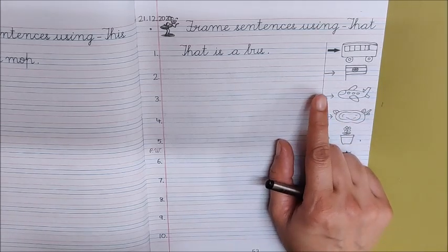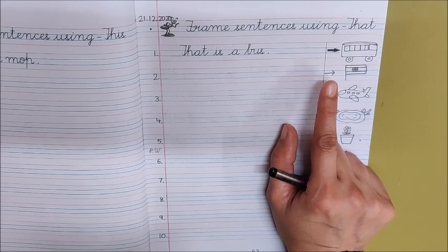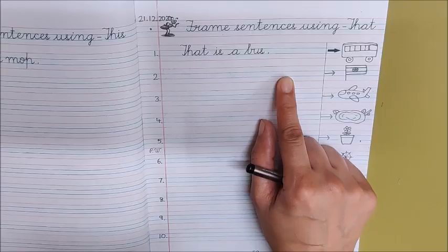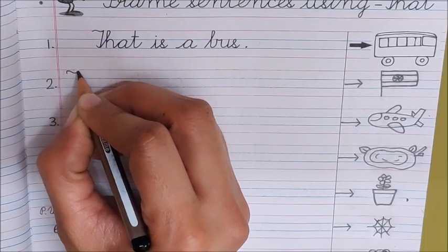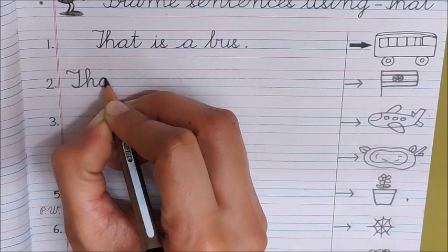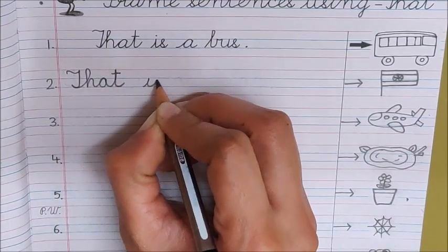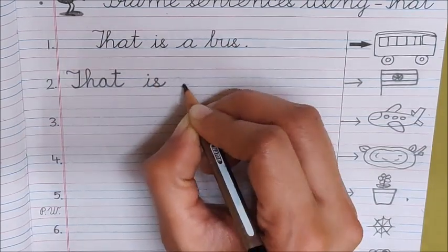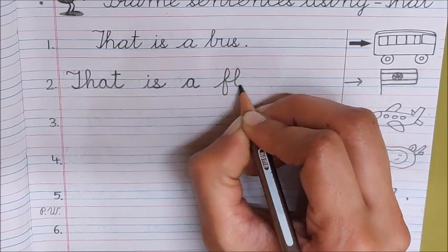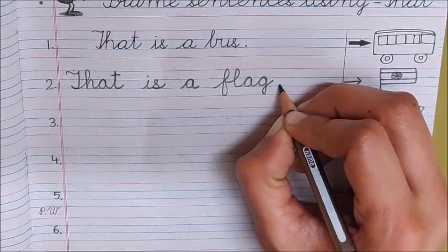Look at the next picture. What is that children? That is a flag. So write the sentence here. T H A T. That is a flag. Full stop.